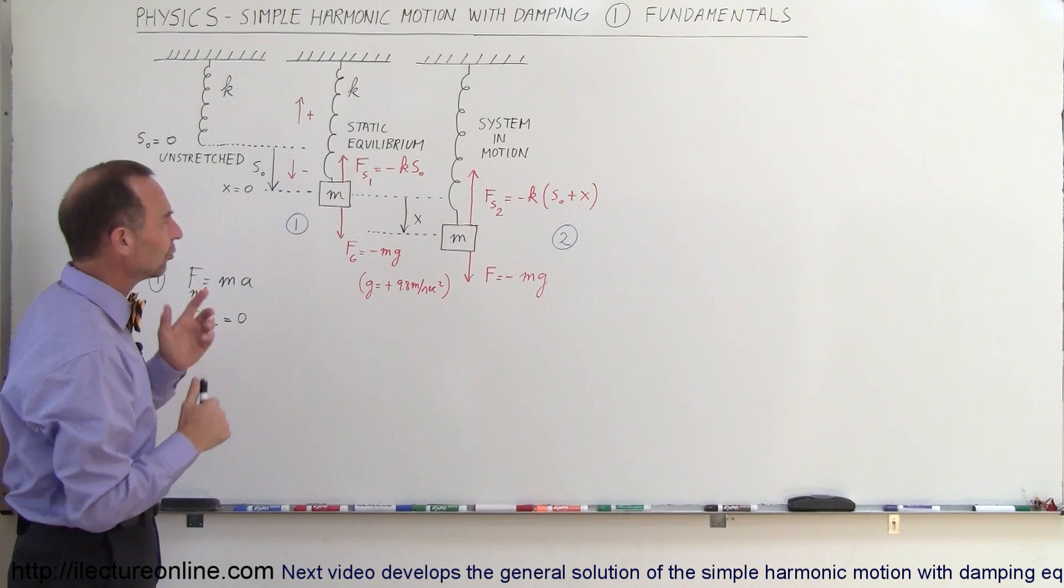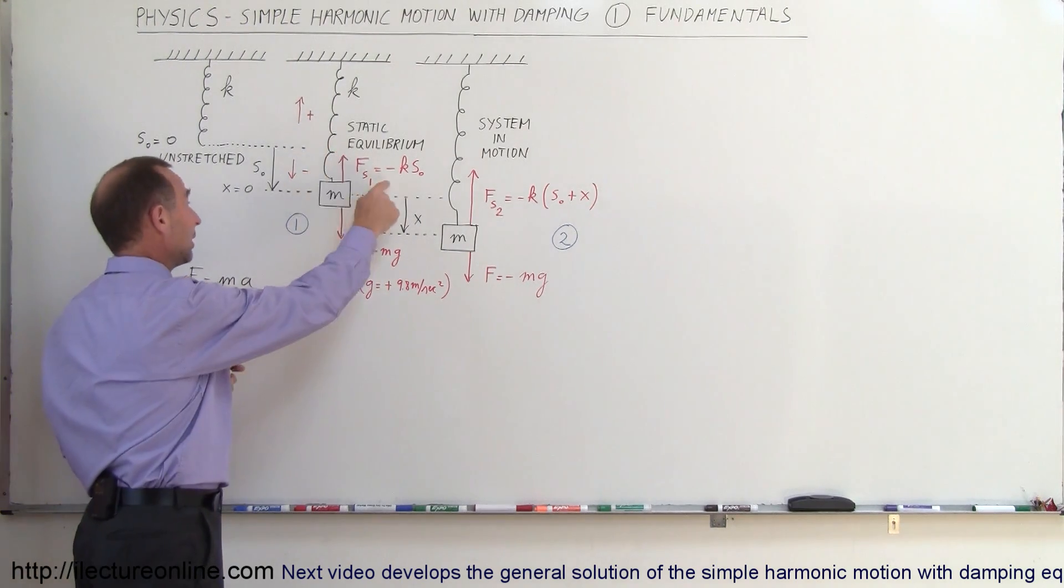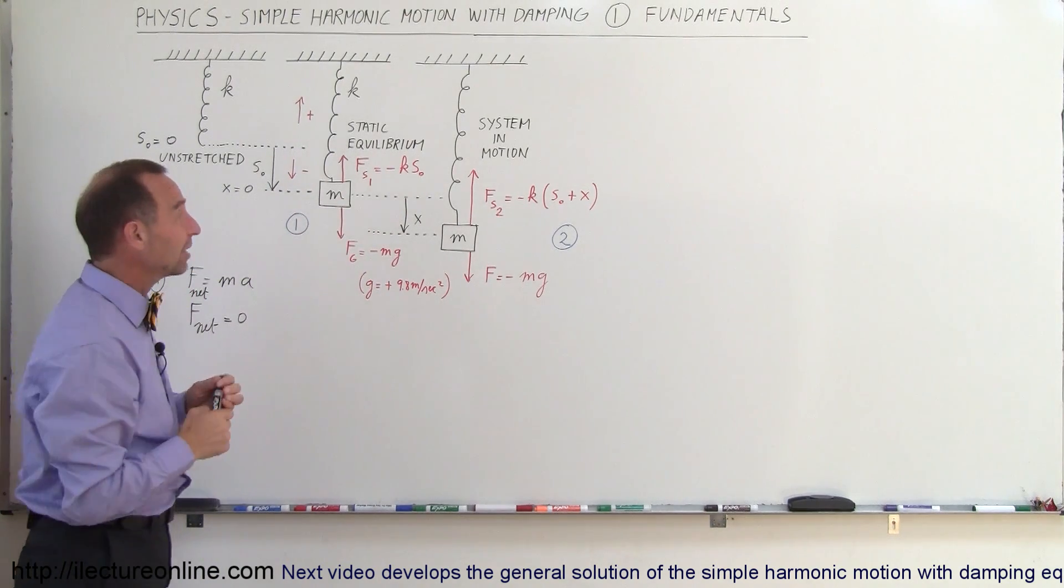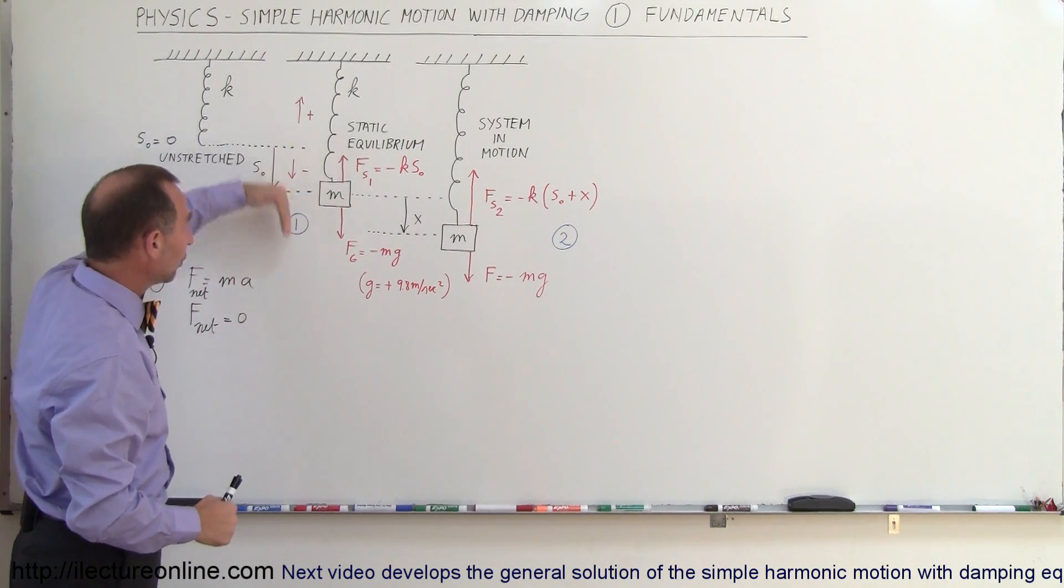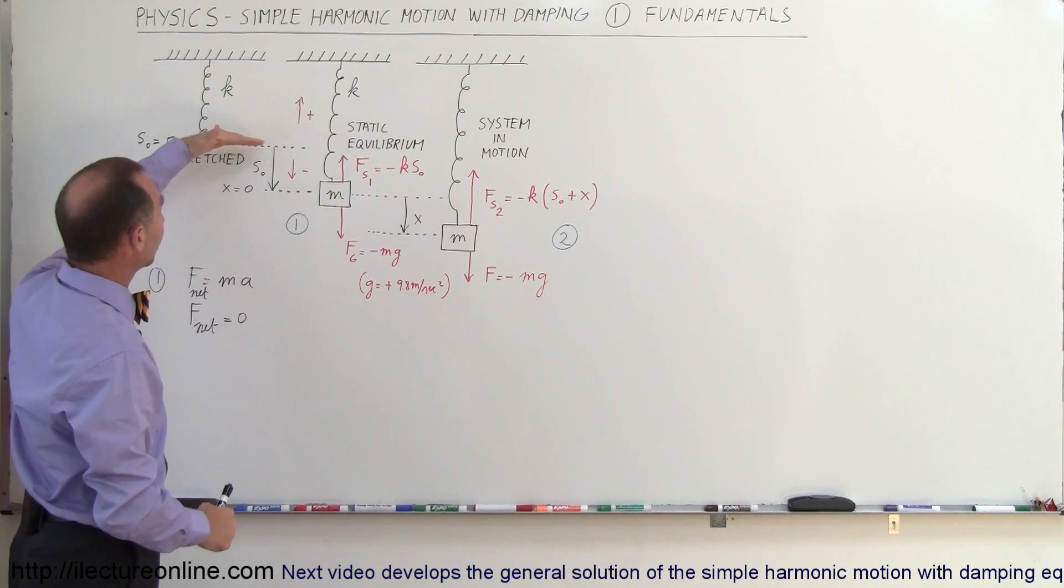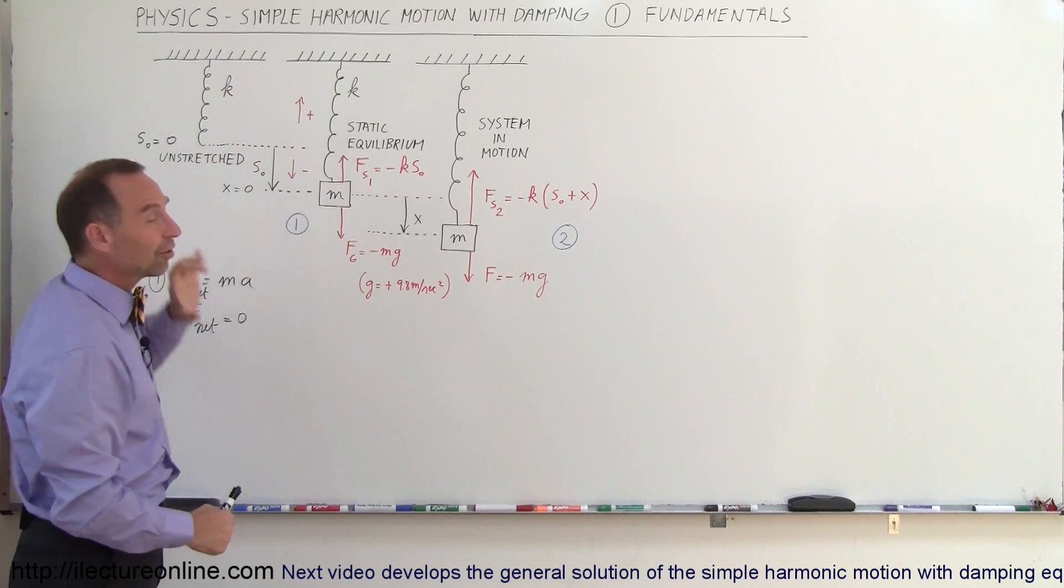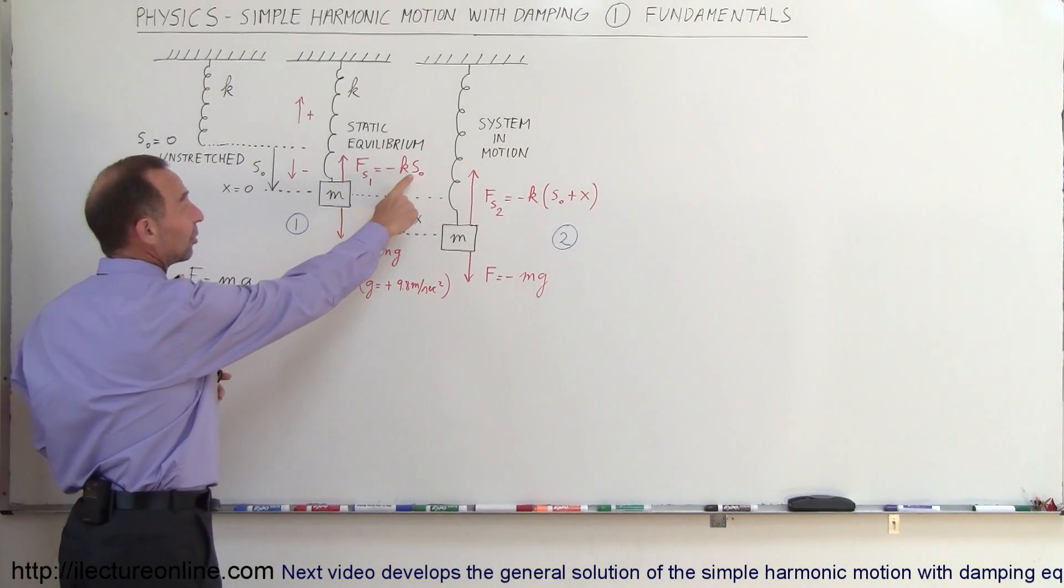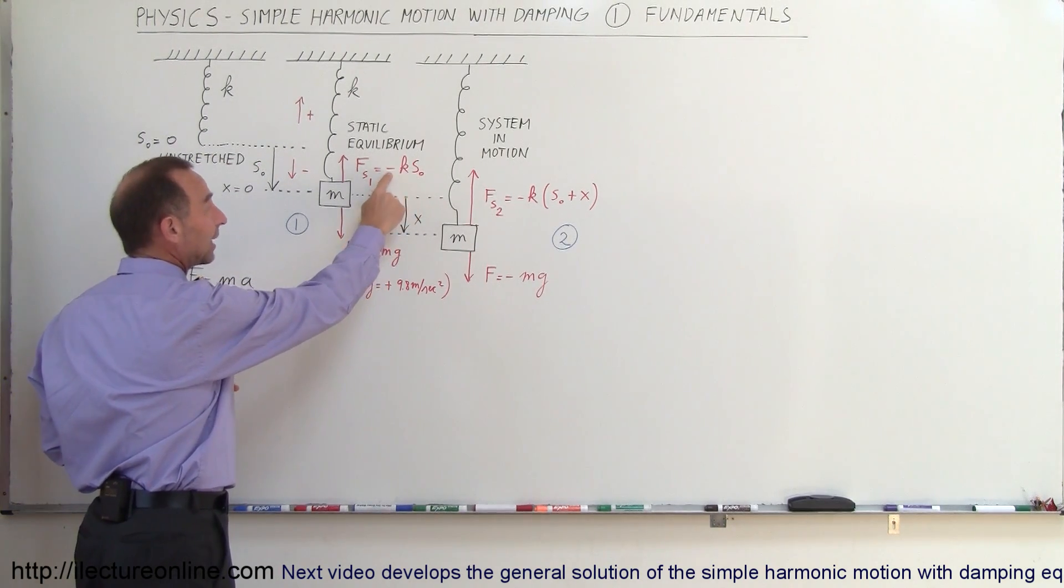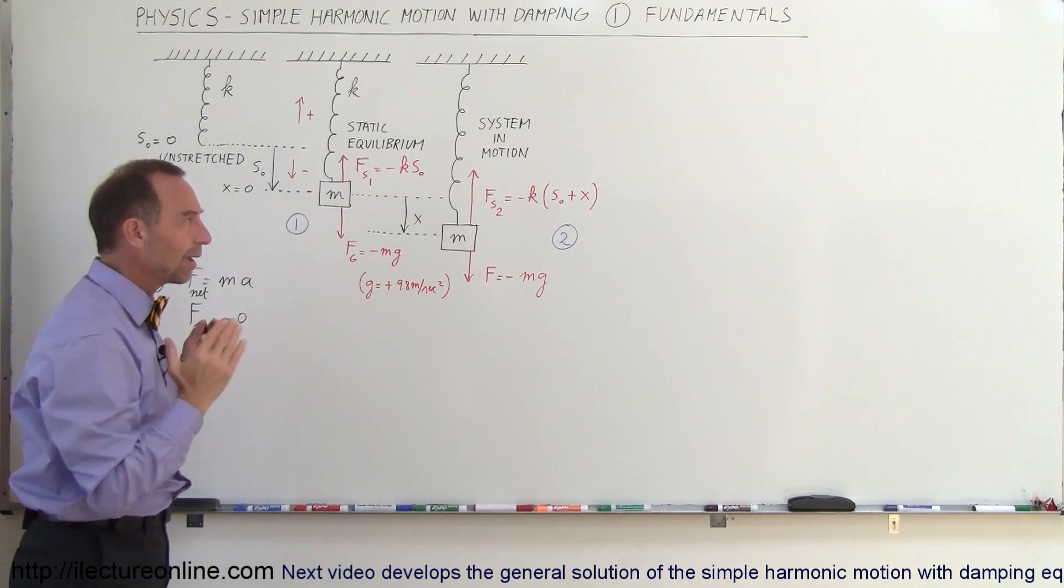That's f sub s in case one and we're going to call that equals minus ks sub zero. Now the minus always confuses students. You see the force pulling upward and yet they have a negative there. But what you have to keep in mind is that downward is considered negative, upward is considered positive. From this position to this position, there's a negative s sub zero displacement. So s sub zero is a negative quantity, so the negative times this negative makes it a positive.